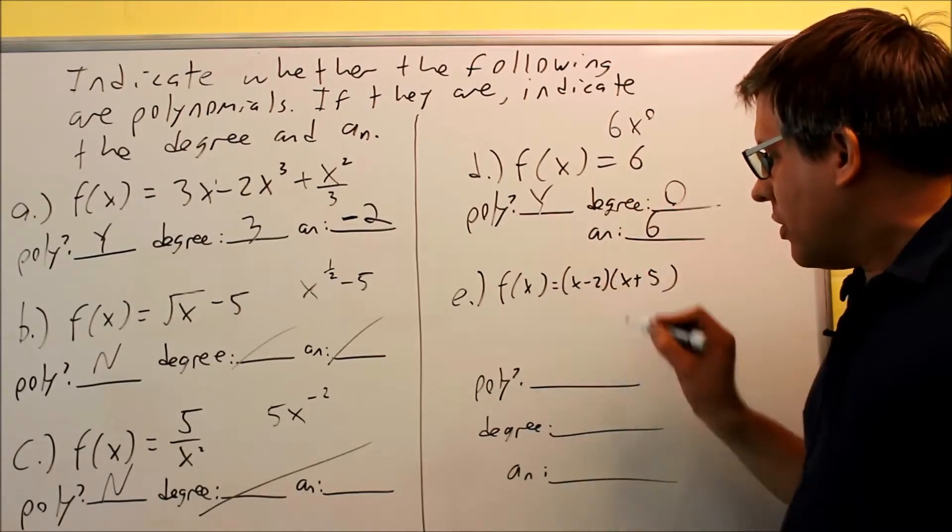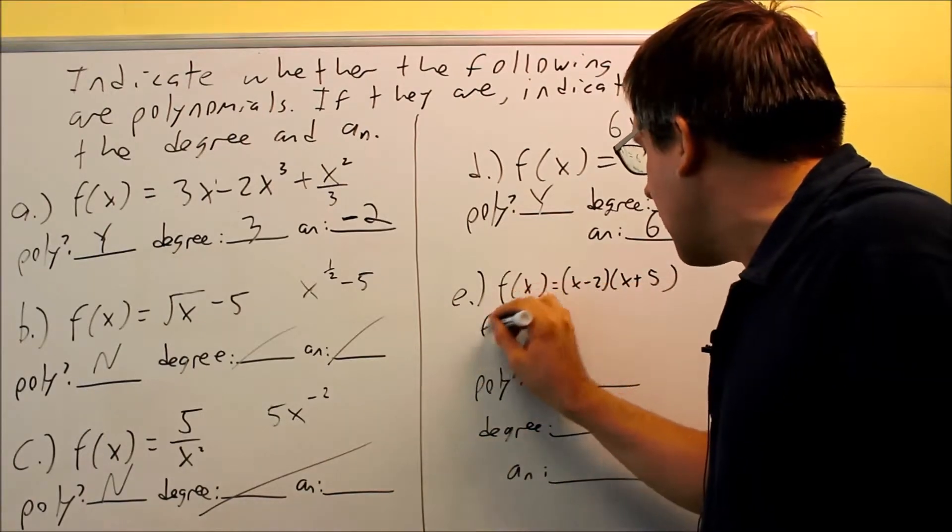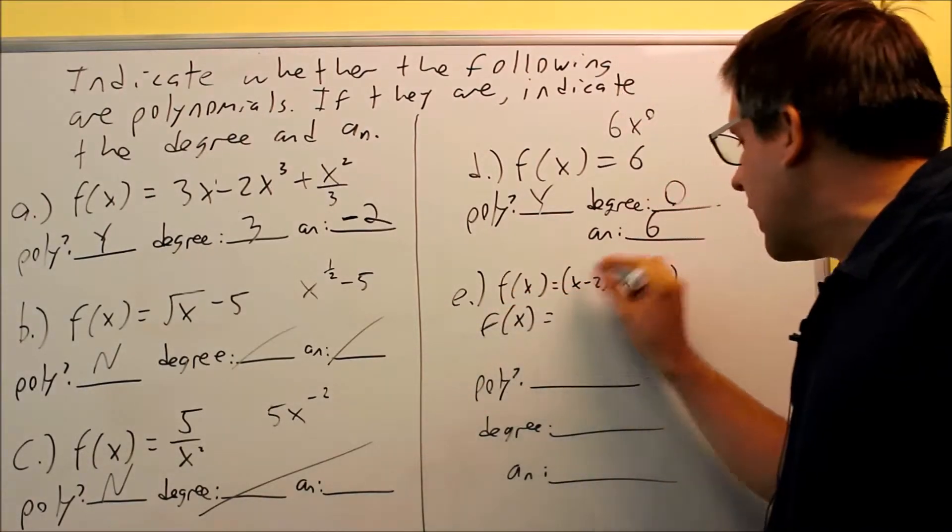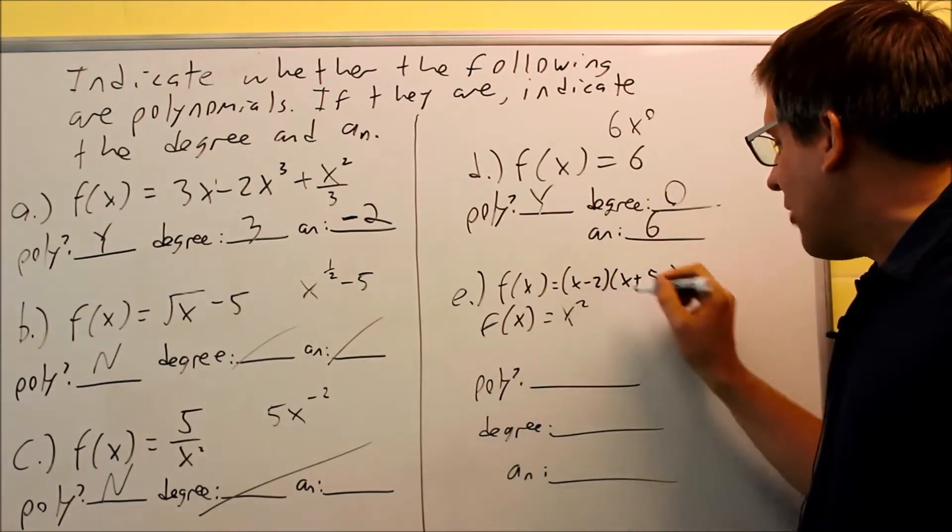Now the last one doesn't look like the ones we've had before. So what you might have to do first is you may have to multiply it out. So we're going to do FOIL on this. So we have x squared. We have a plus 5 minus 2, that's plus 3x and then minus 10.